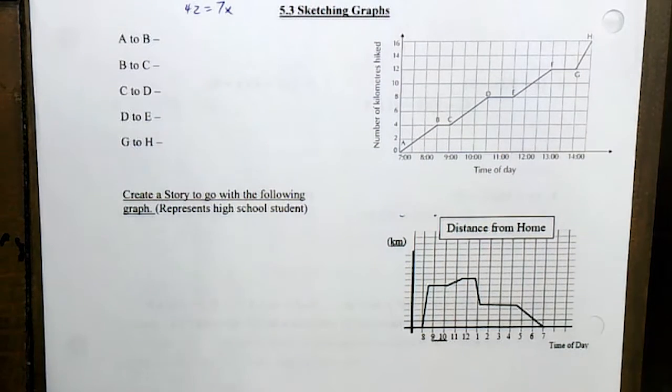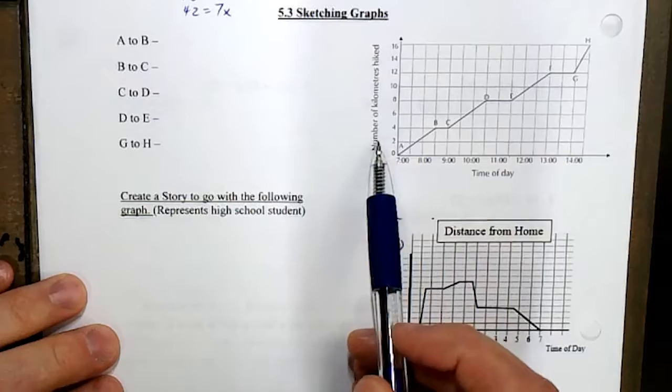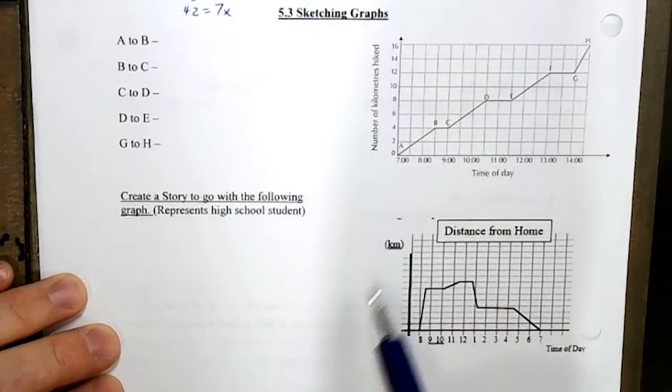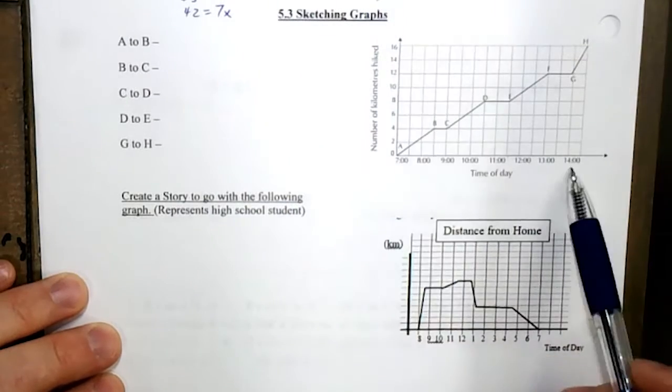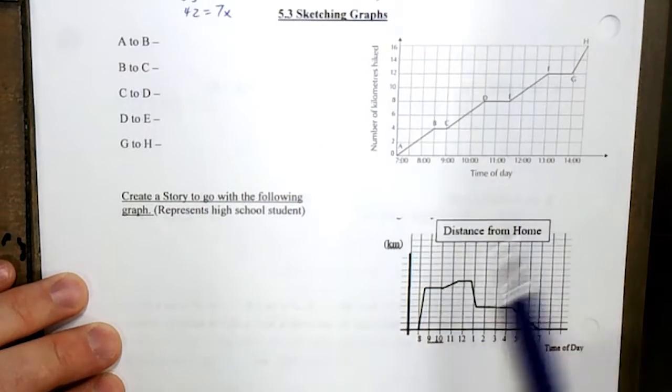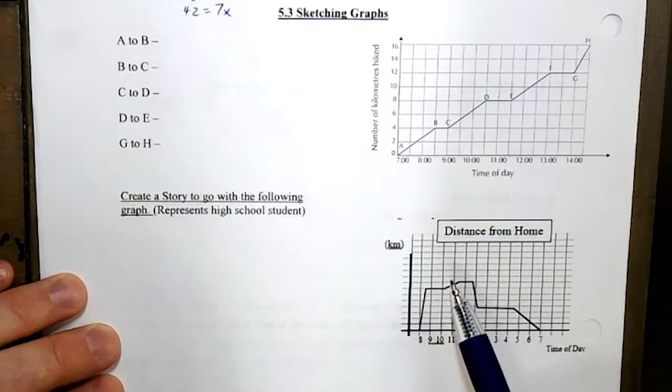Now we're getting into sketching graphs and we have to represent real-life information with a graph. In this case, we're looking at number of kilometers height and we can see that they're going up to 16 kilometers for the day and the time of day. So they start at 7 and they finish at 2 in the afternoon.